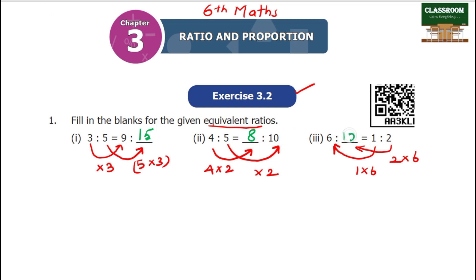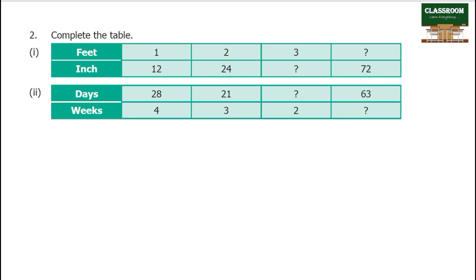So now we can compare these numbers. The next number is easy to find out. Next question: complete the table. First, feet and inch: 1, 12, 2, 24, 3. What do we do? First, what do we do?